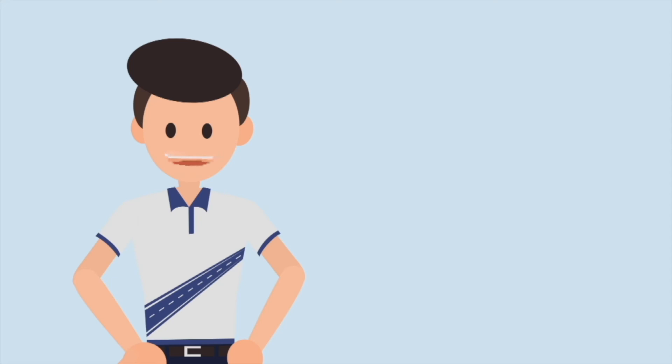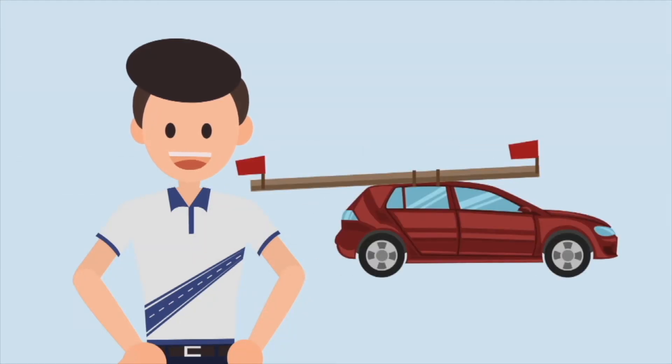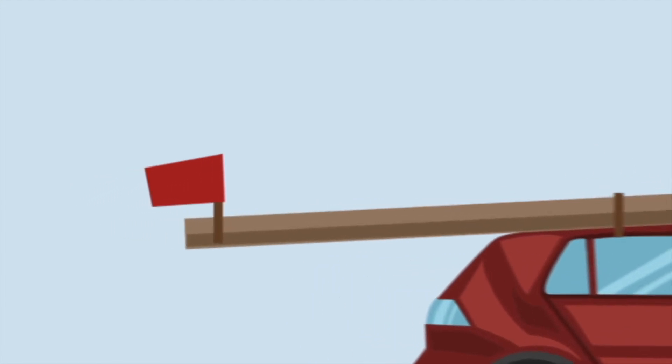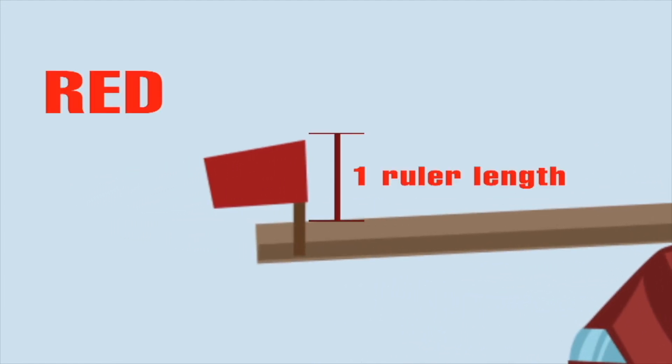May mga pagkakataon naman na may mga top load o pangarga tayo na ang haba ay higit pa sa isang metro ng total length ng minamanayho nating sasakyan. Sa pagkakataon ito, obligado tayo nakabitan ng banderang hindi iiksi ng isang ruler ang mga sukat, ang dulo ng lahat ng projecting end ng mga pangarga.